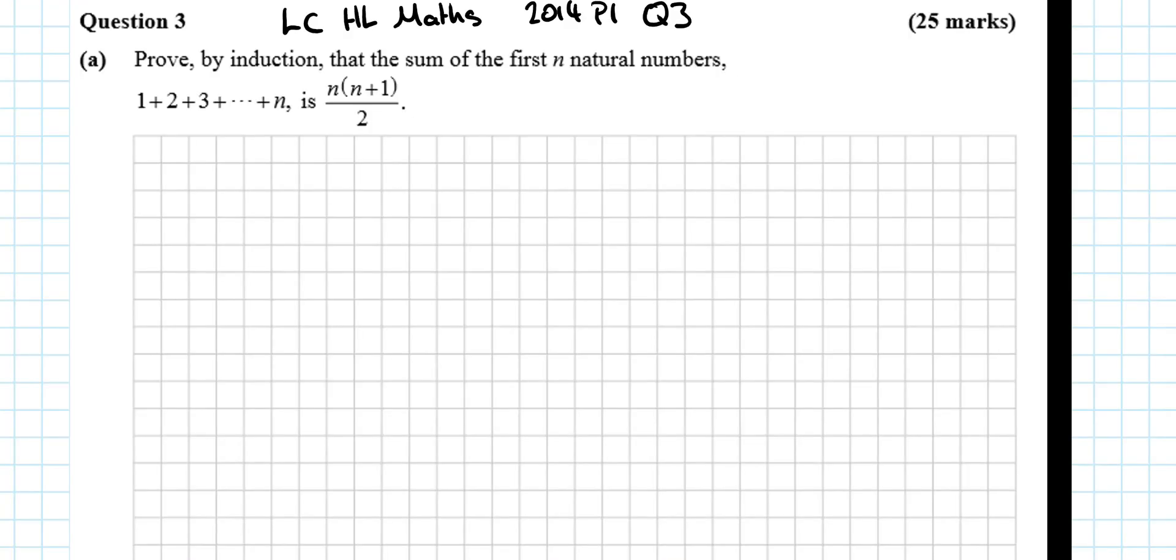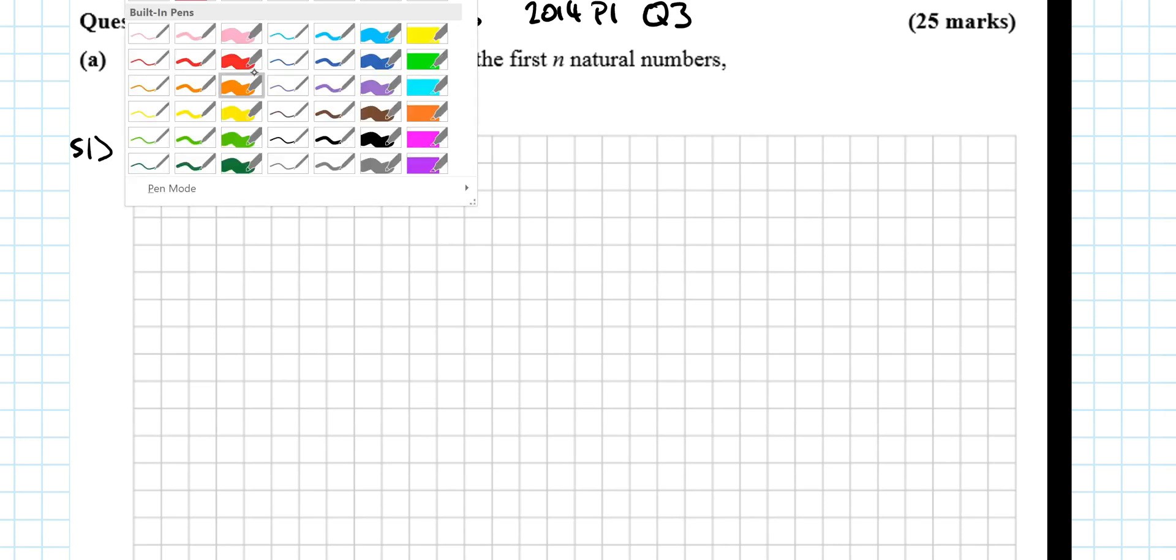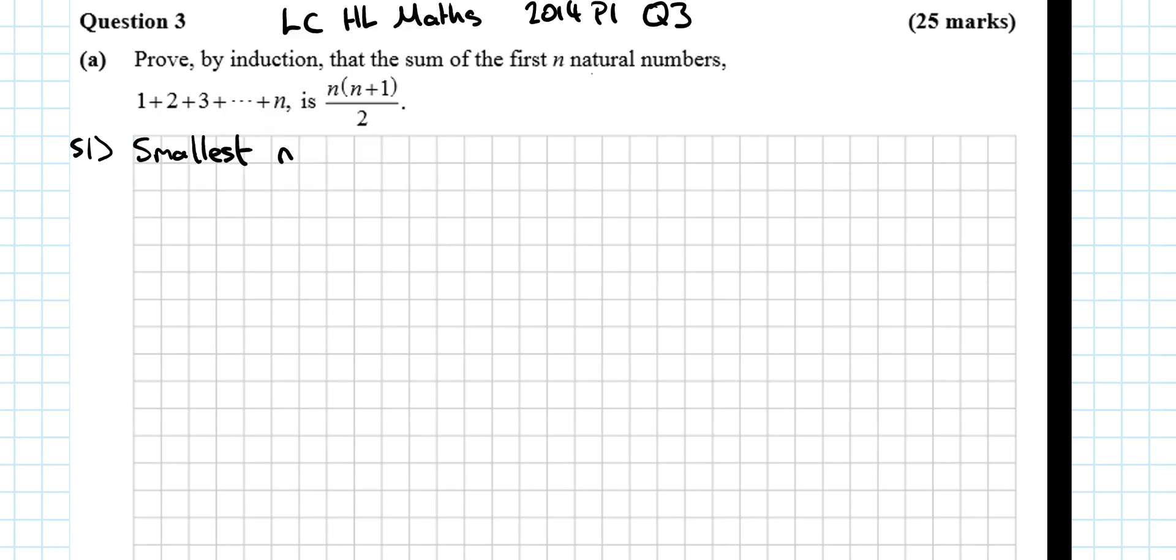So here we're looking at Leaving Cert Higher Level Maths 2014, Paper 1, Question 3, and we begin with a proof by induction series question. Asked to prove that 1 plus 2 plus 3 plus dot dot dot plus n is equal to n by n plus 1 over 2. Step 1 is prove true for smallest n. In this case, there's no restriction, the restriction is that n is natural numbers, so smallest n is n equals 1.